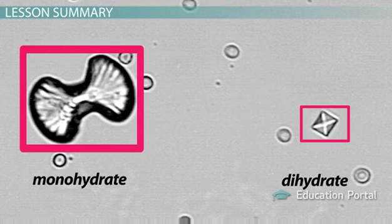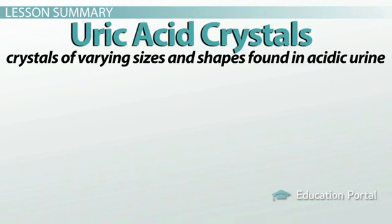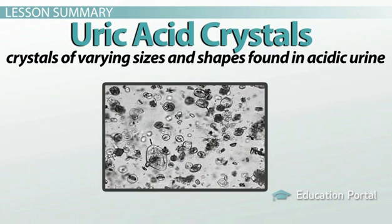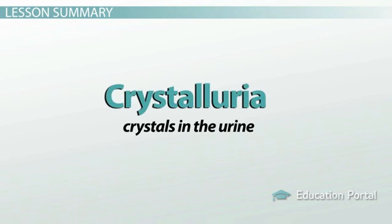Last, but certainly not least, uric acid crystals — a type of crystal of varying sizes and shapes found in acidic urine — may be found upon examination of the urine. These crystals have shapes that can resemble rhomboids, parallelograms, and rosettes, and they tend to be amber in color and may indicate a serious destructive process as a result of cancer treatment in a patient. And don't forget that any form of crystals in the urine is known as crystalluria.